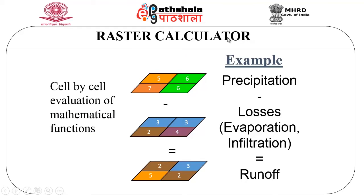There is something called a raster calculator, which does cell-by-cell evaluation of mathematical functions. For example, precipitation minus loss gives a runoff. Looking at the various layers, the precipitation layer minus the loss layer gives the bottom runoff layer. For each cell — for instance, a cell with a precipitation value of 5 and a loss value of 3 gives a runoff value of 2. This is applied for all cells in the grid, and this is called the raster calculator.